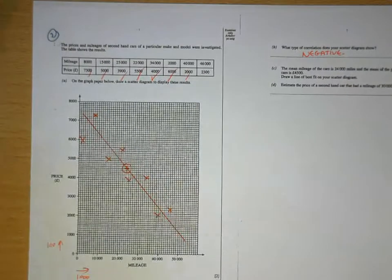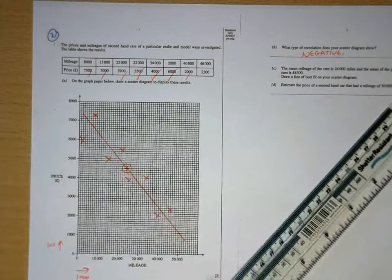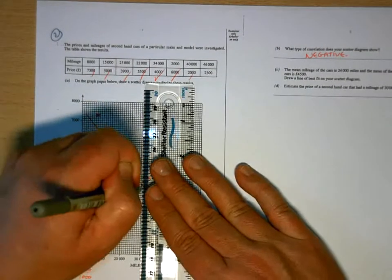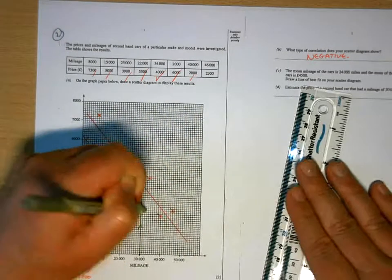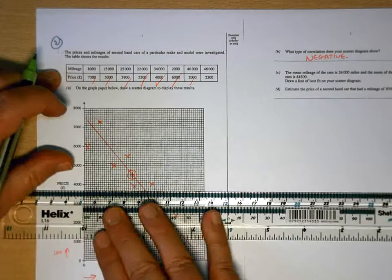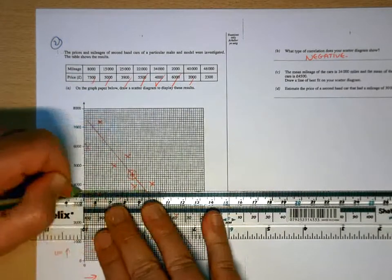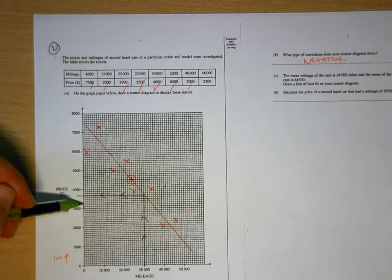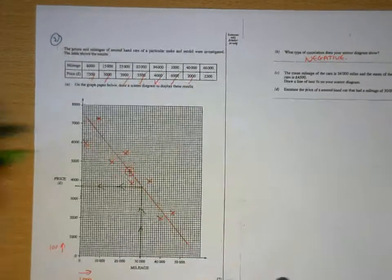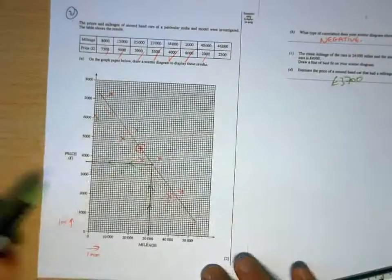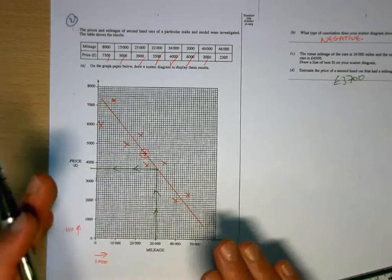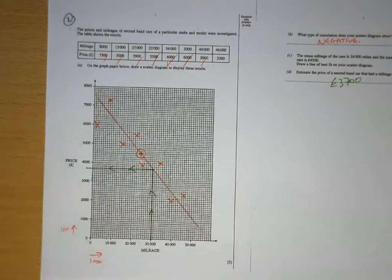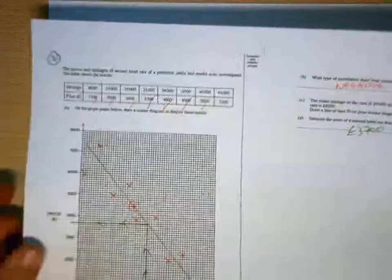And now I estimate the price of a second-hand car. It had a mileage of 30,000. So 30,000 is there. So I'm going to estimate from my graph that that's going to be a value of 3,700 pounds. Now if your line is slightly different angle to that, then you'll get a slightly different value, but that will be within an acceptable range, and you'll still get the mark. So that's a negative correlation.